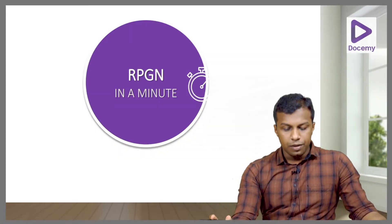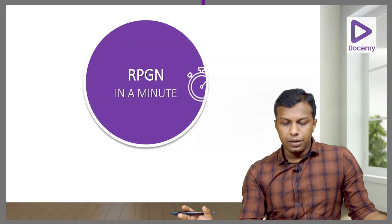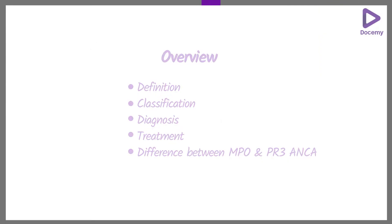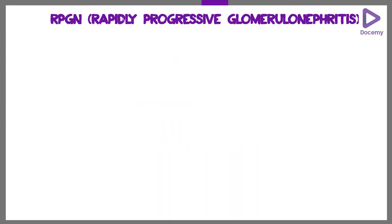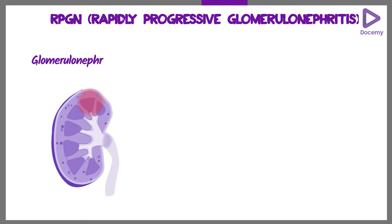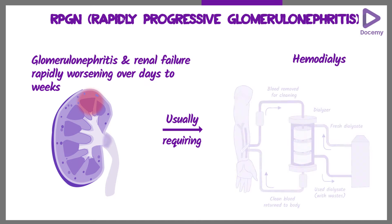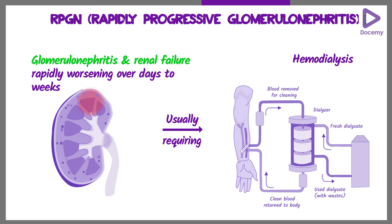Hi friends, we will discuss RPGN. RPGN is rapidly progressive glomerulonephritis. There will be glomerulonephritis and renal failure which is rapidly worsening over days to weeks, usually requiring hemodialysis. So the patient is having glomerulonephritis and renal failure.